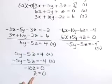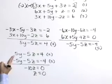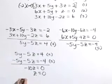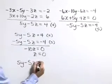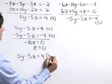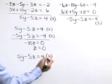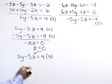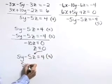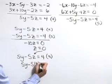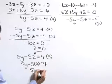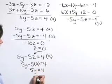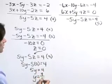We've found the value for z. Now let's go back to equation four and solve for y. Equation four is five y minus five z equals four. Substituting z equals zero: five y minus five times zero equals four, so five y equals four, or y equals four fifths.